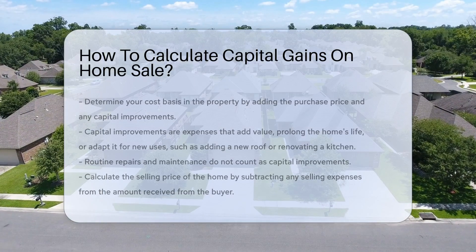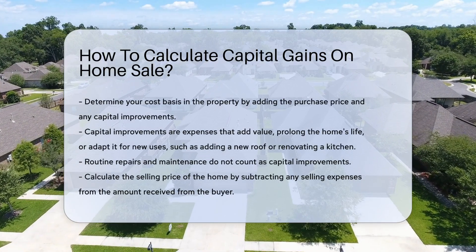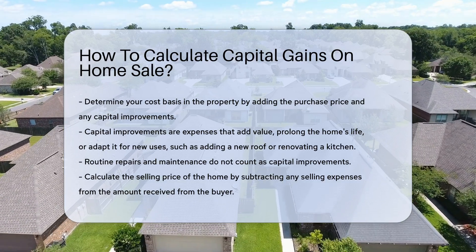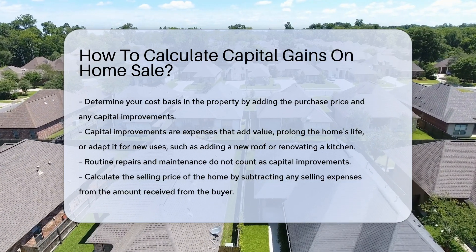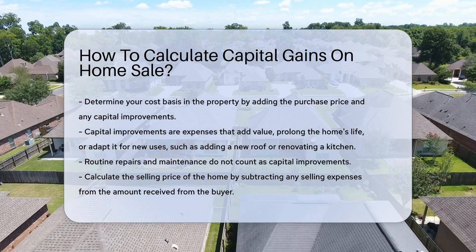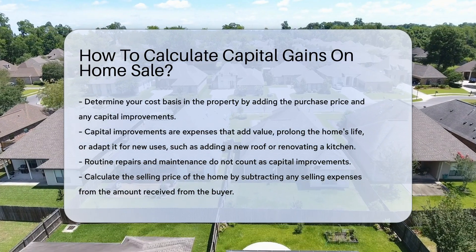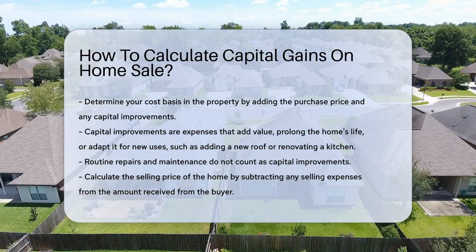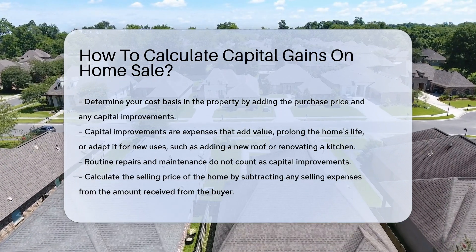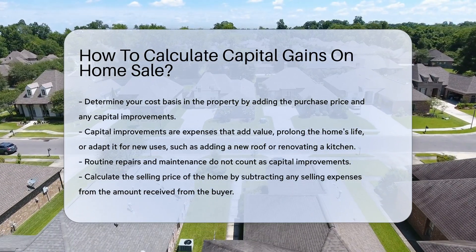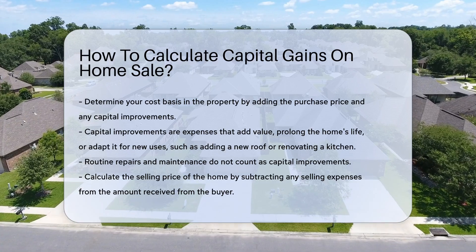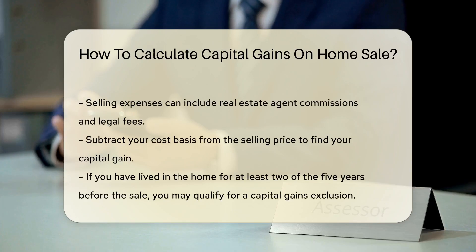Capital gains on the sale of a home can be a complex topic. The first step is to determine your cost basis in the property. This includes the purchase price plus any capital improvements made to the home. Capital improvements are expenses that add value to the home, prolong its life, or adapt it for new uses. Examples include adding a new roof or renovating a kitchen. Routine repairs and maintenance do not count as capital improvements.